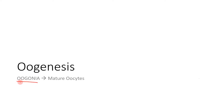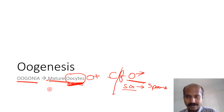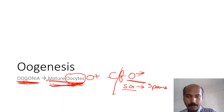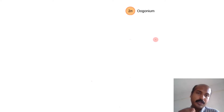Oogenesis is the conversion of oogonia to mature oocytes. A key contrasting difference from spermatogenesis is that spermatogenesis is the conversion of spermatogonia to mature spermatozoa, whereas oogenesis only goes up to the mature oocyte stage. This is one very important point: oogenesis includes only the process of conversion of oogonia to mature oocytes.